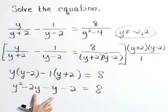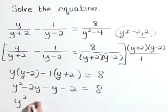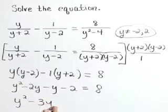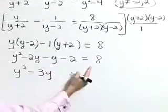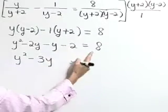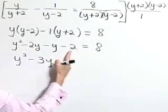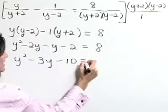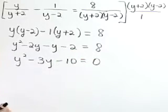Let's combine like terms and write this next step as y squared minus 3y. Let's also bring that 8 over to the left, subtracting 8 from both sides. Negative 2 minus that 8 is a negative 10, equals 0.